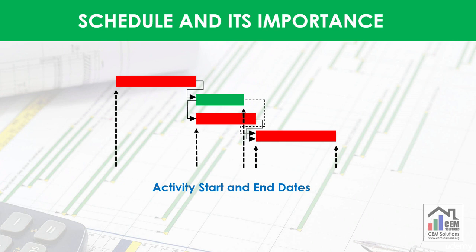Schedule gives start and end dates of activities. These dates are important for the contractor for timely purchasing of the materials, timely starting the material approval process, managing the resources, and to plan execution of activities to avoid any delay to the project.